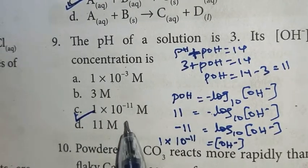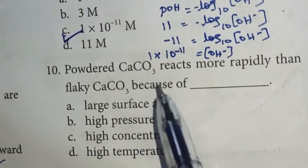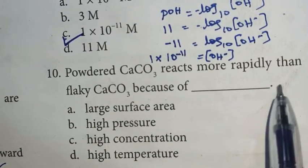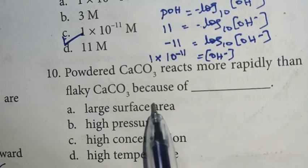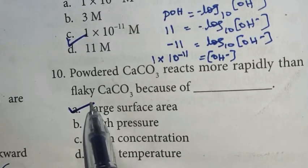Tenth question: Powdered calcium carbonate reacts more rapidly than flaky calcium carbonate because of large surface area. Option A is the right answer.